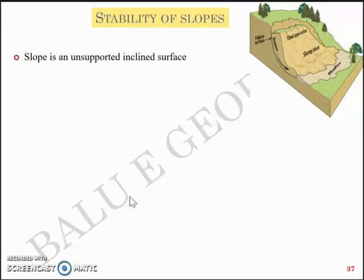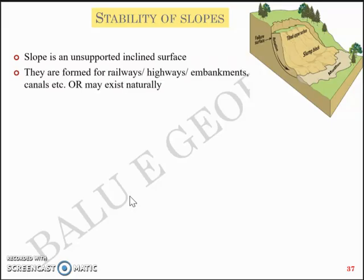Slopes, you're all familiar, is nothing but an unsupported inclined surface. Whenever you travel through the road or the railways you'll be familiar with the embankments on which the railways and highways will be constructed. So they form what we call as a slope, or the slope may actually exist naturally as well. When you travel you can see natural slopes as well.